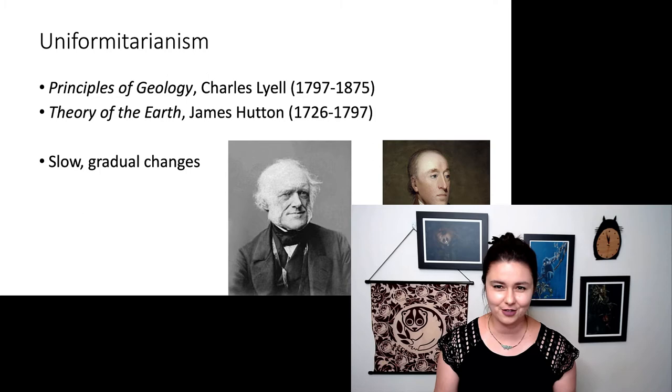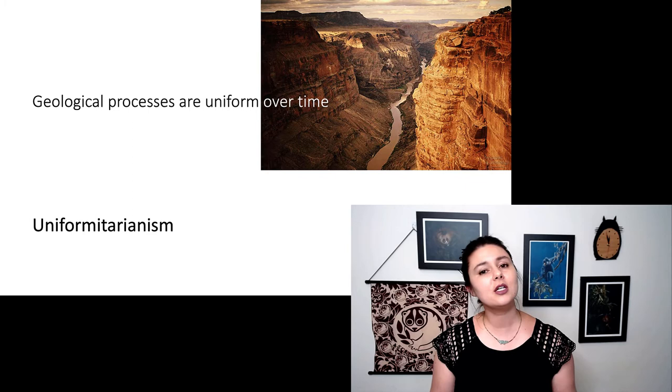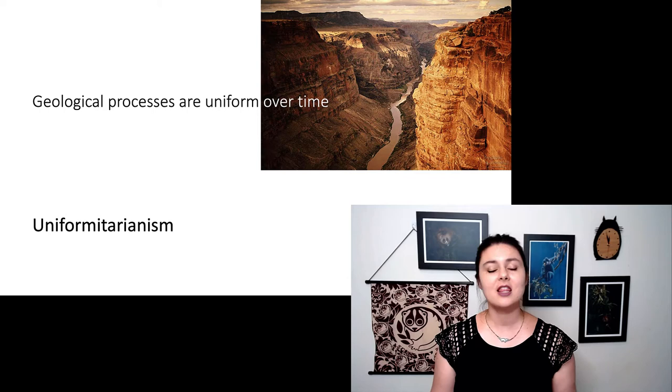The idea of uniformitarianism is that geological processes are uniform over time. So if we are observing these small changes today, then that's what we can expect in the past. If geological processes are uniform over time, to get such tall mountains and deep valleys that we see today, that implies that the Earth is very old.